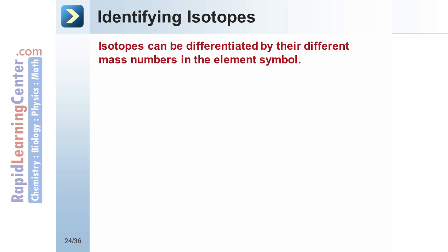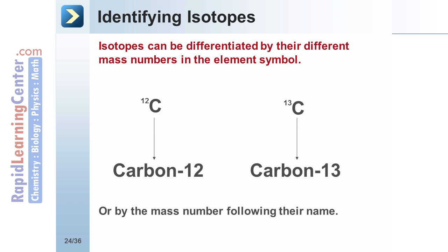Isotopes can be identified by the number at the upper left corner of their symbol. They can also be identified by placing the mass number after the element name, as in carbon-12 or carbon-13.